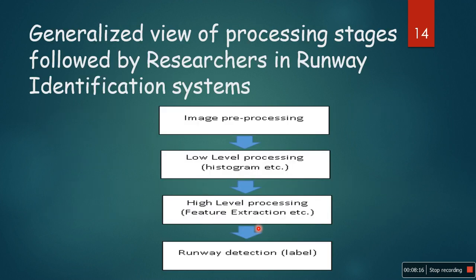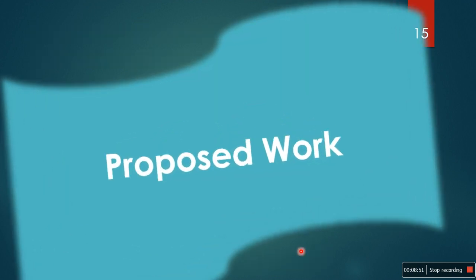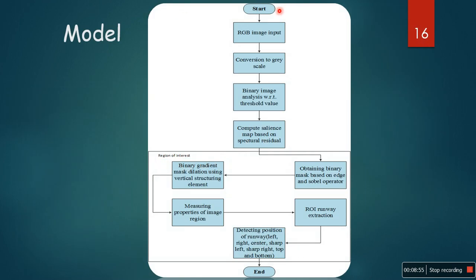Vision-based runway detection and position estimation for a safe landing system: this is a generalized overview of the processing stages followed by researchers in runway identification. Image processing is performed — low-level histogram, noise removal, and filtering operations are done. Then high-level feature extraction is performed, including bag of visual words, local binary pattern, and other features. Then runway detection and classification are performed. In our proposed work, the algorithm starts by capturing the RGB input image from the camera, then conversion to grayscale is done.